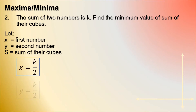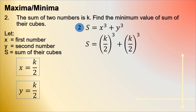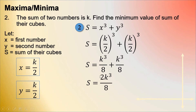Substituting the values of x and y into the sum of cubes: (k/2) cubed plus (k/2) cubed equals k³/8 plus k³/8, which equals 2k³/8. Simplifying, the minimum sum of their cubes is equal to k³ over 4.